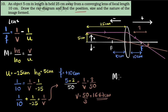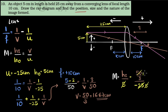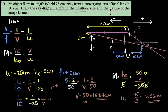To find the size of the image, we use the magnification formula: height of image divided by height of object equals V divided by U. The height of the object is 5 centimeters, V is 50/3, and U is minus 25. Simplifying, we get the height of the image to be minus 10/3, which is minus 3.33 centimeters. The minus sign tells us the image is below the principal axis — it is inverted. The size is 3.33 centimeters, which is diminished compared to the object. Because it is inverted, we know it is a real image.